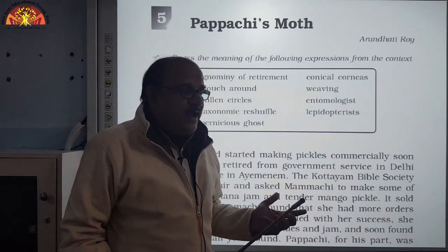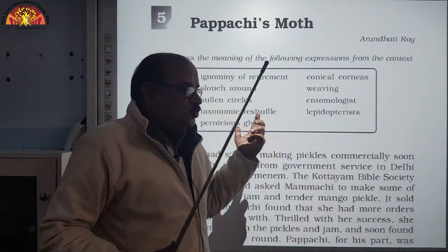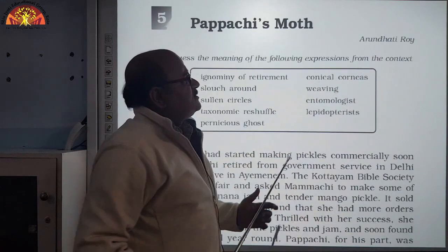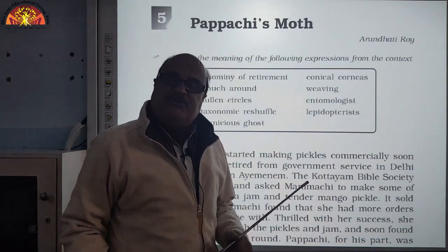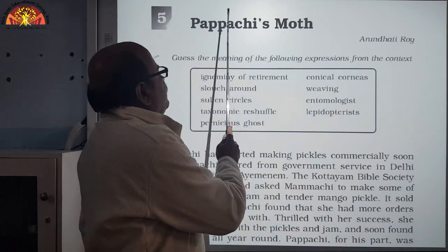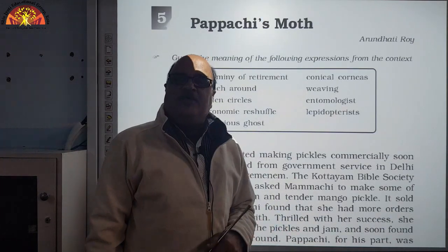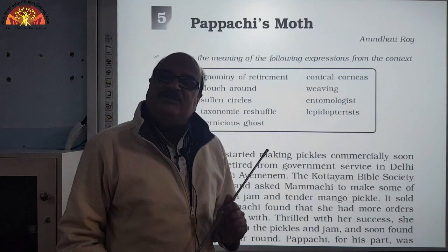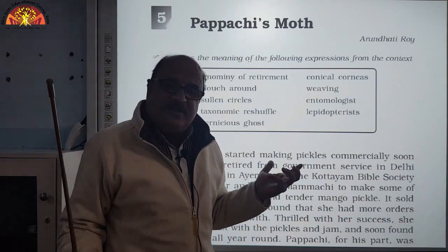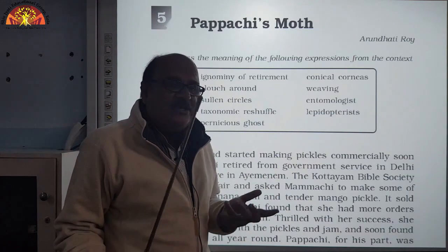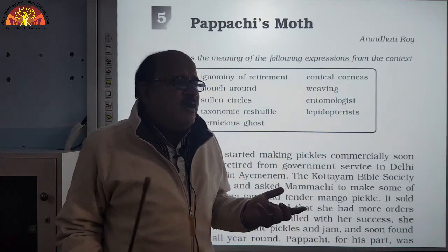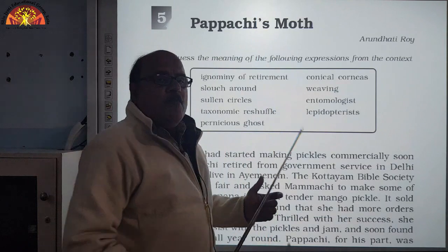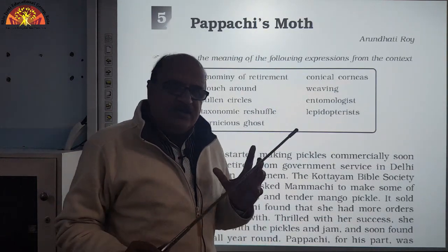Arundhati Roy is one of the great writers, social activist, and novelist. Before we discuss the writer, we are going to discuss the title of the chapter. Papaji is the main character of this chapter, who is too much frustrated in his life — frustrated regarding his career, his social life, and his personal life. He is the main protagonist of this chapter.